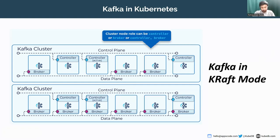This allows all brokers to communicate with the controllers. One of these controller brokers will be the active controller, which handles communicating metadata changes to all other brokers. All controller brokers maintain an in-memory metadata cache that is kept up to date, so any controller can take over as the active controller if required. This is one of the features of KRaft that makes it much more efficient than the ZooKeeper-based control plane.